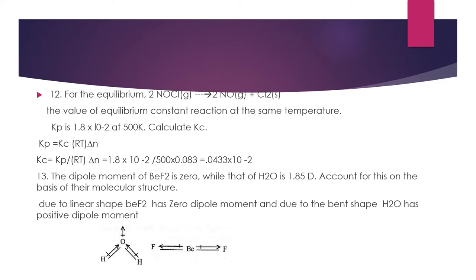Question 13: The dipole moment of BeF2 is zero while that of H2O is 1.85 D — account for this based on their structures. Both BeF2 and H2O have polar bonds due to electronegativity differences. In BeF2 the structure is linear, so the dipole moments on each side cancel each other, giving a net dipole moment of zero. In water, however, both bond dipole moments point in the same direction due to its bent (V-shaped) structure, so the resultant dipole moment is positive.